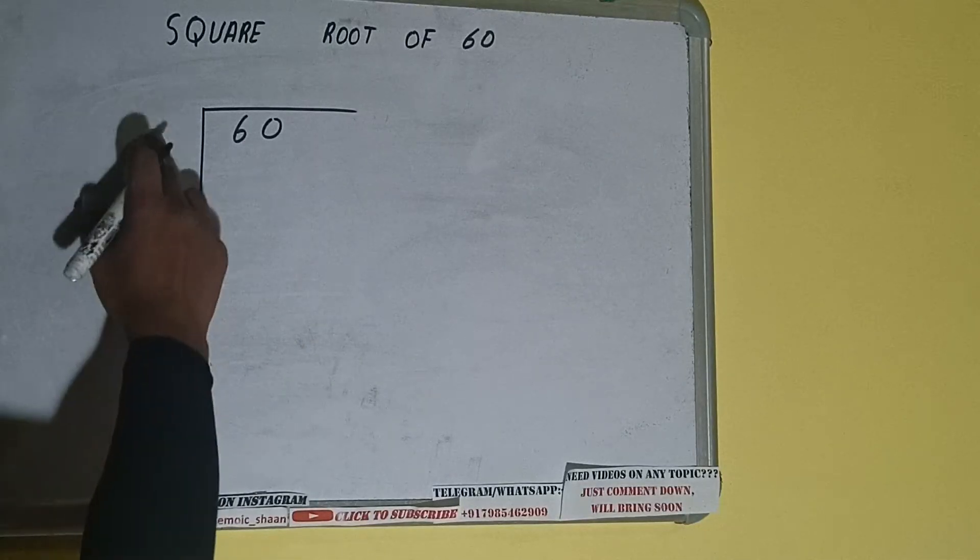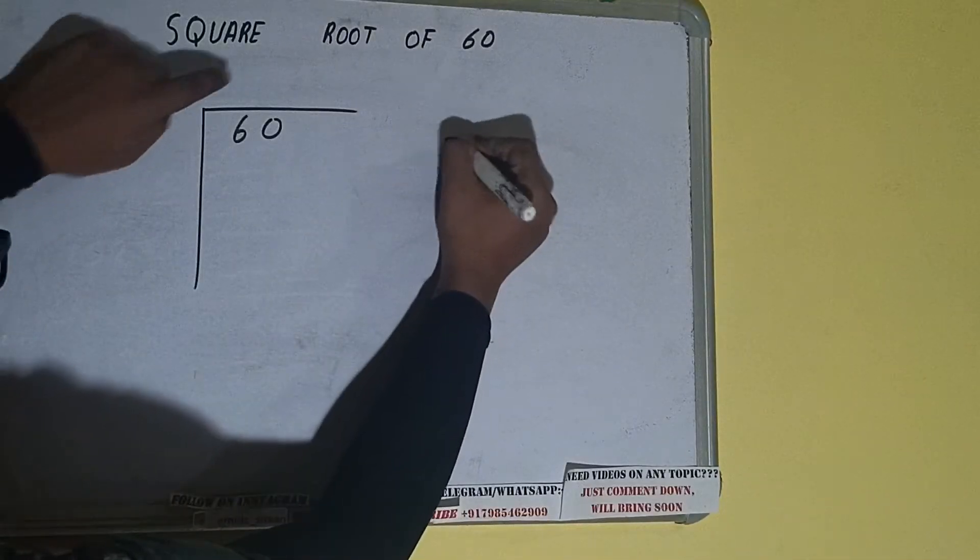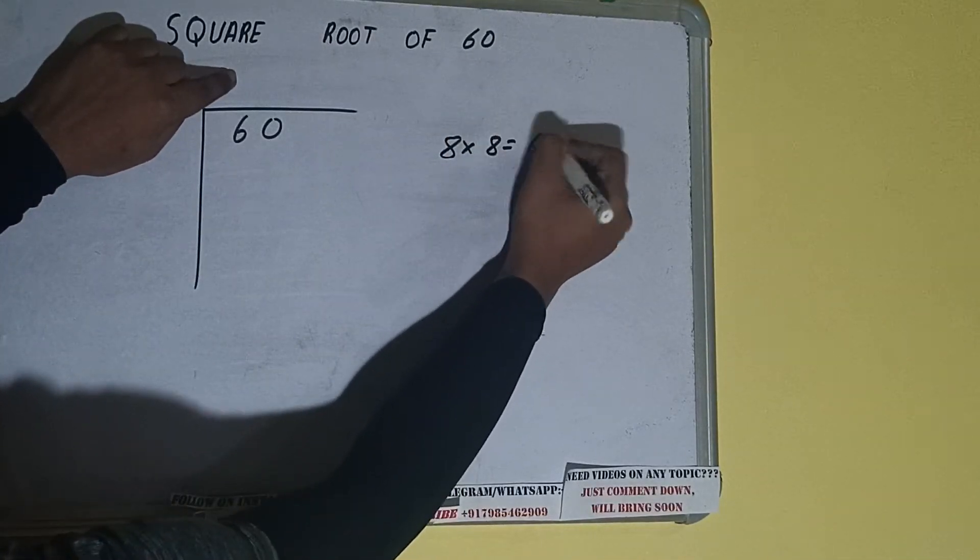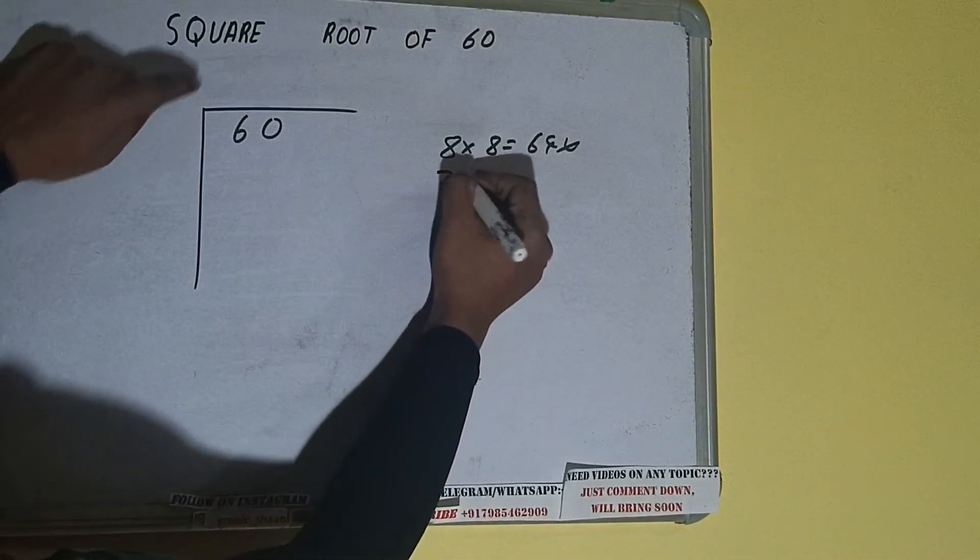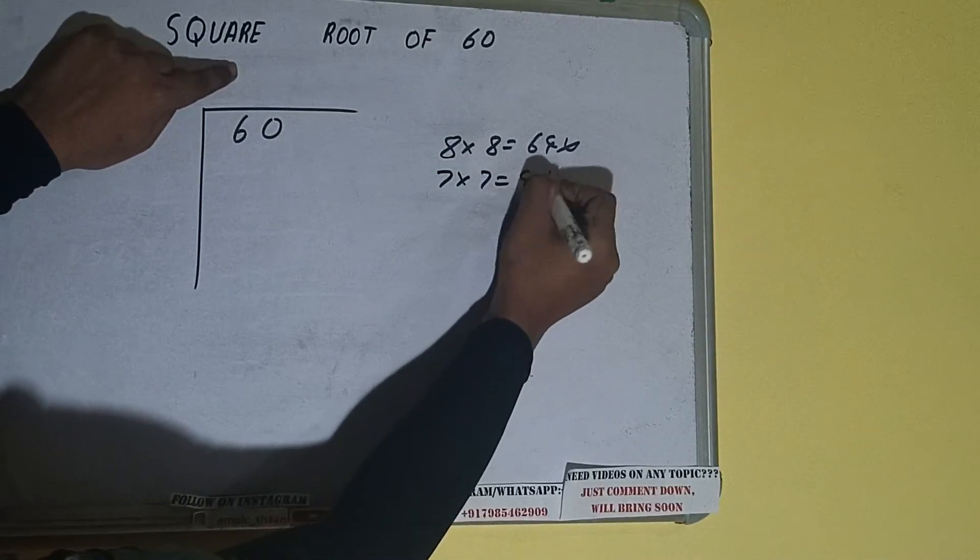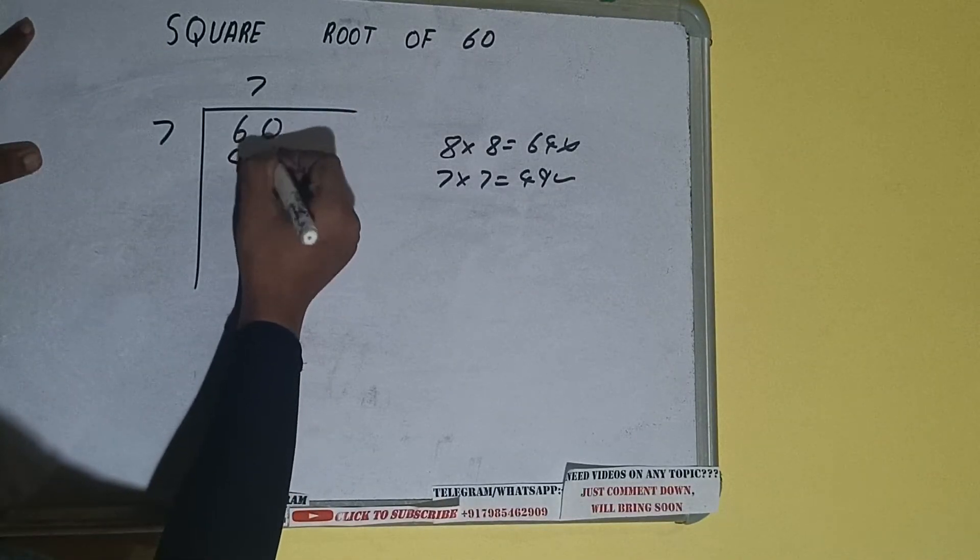So if we write 8 here and 8 here, it will be 64, which is greater than 60, so we cannot take it. If we write 7 here and 7 here, it will be 49, which is good to take. So 7 here and 7 here, 49.